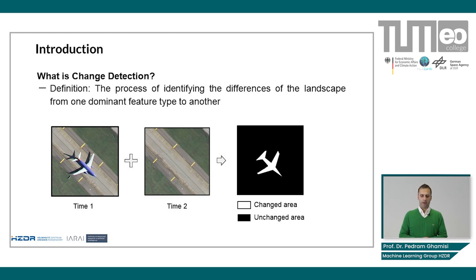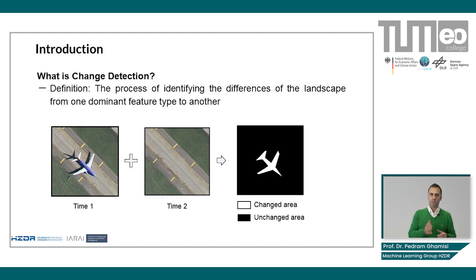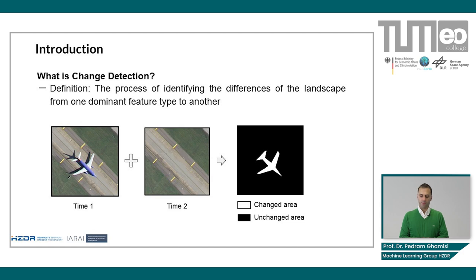Let me provide a bit of introduction to make sure we are all on the same page. What is change detection? The process of identifying the differences of the landscape from one dominant feature type to another is regarded as change detection. In simple words, let's imagine we capture images from exactly the same scene at two different times — time one and time two — where change areas are highlighted in white and the background is classified in black. This is what we do in a binary change detection approach.